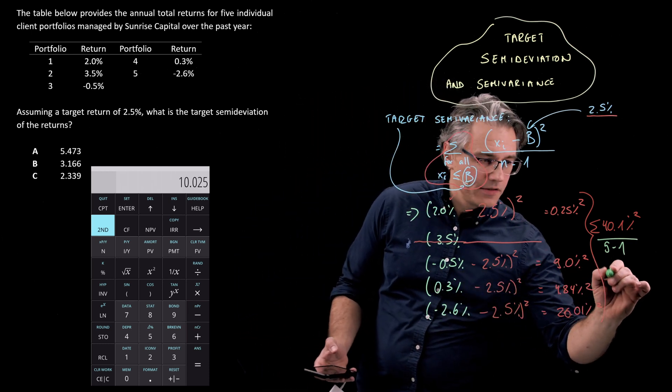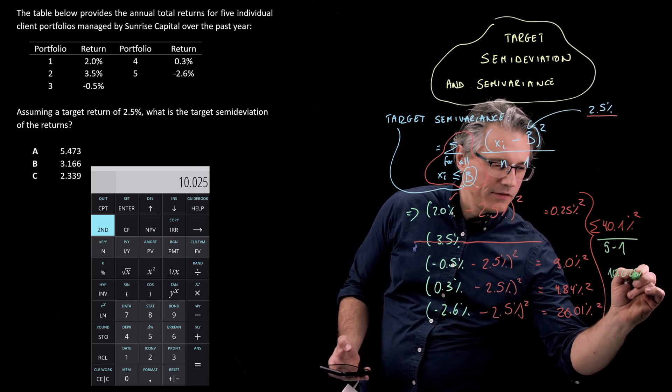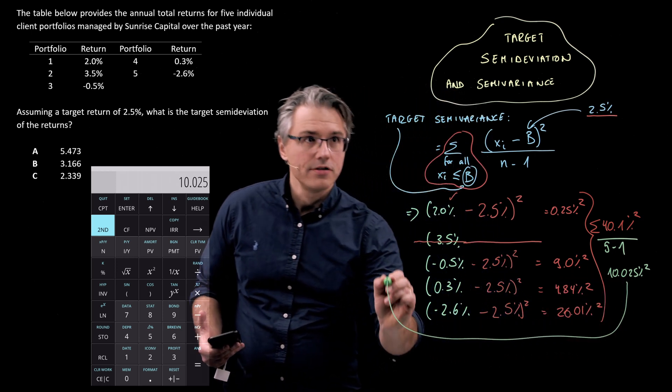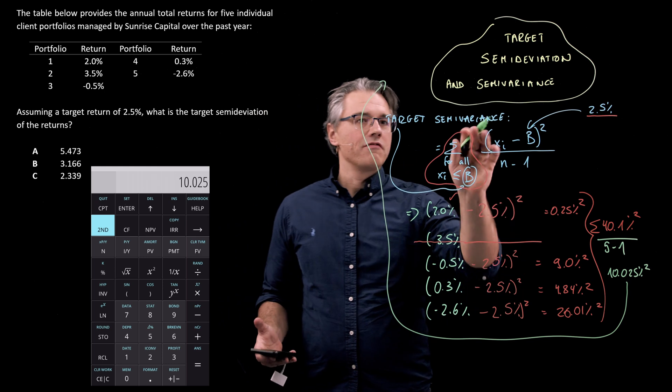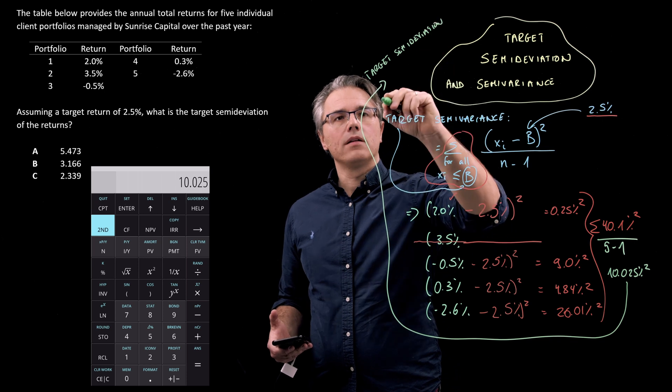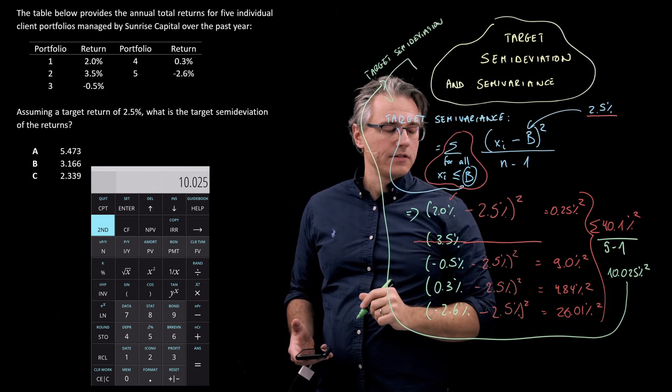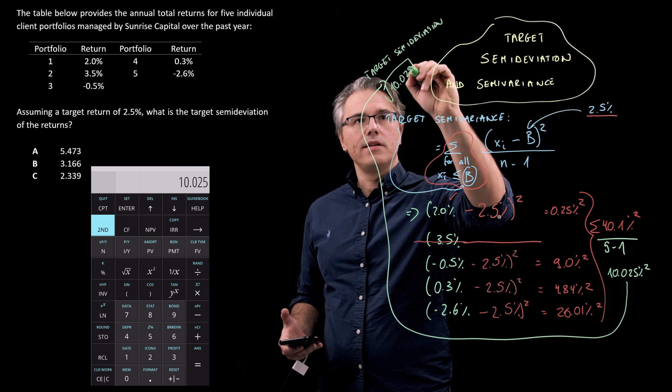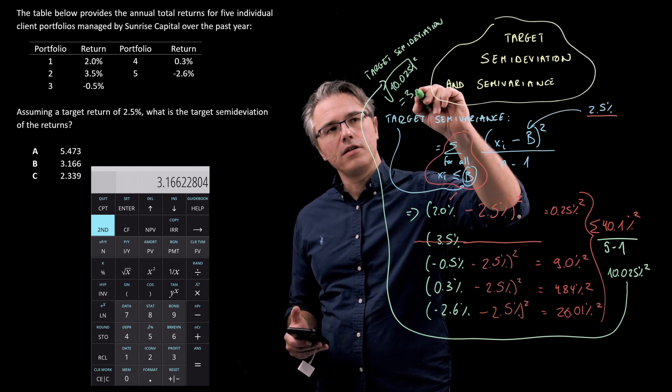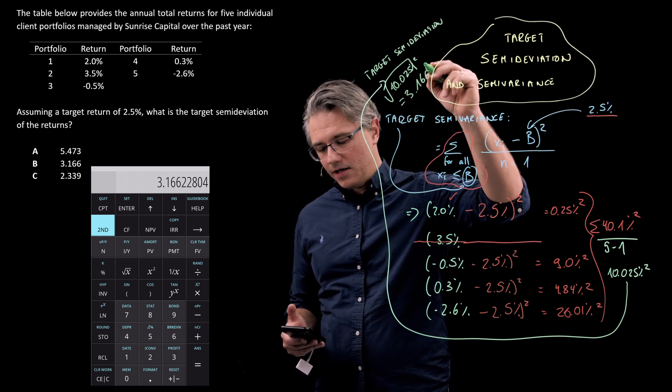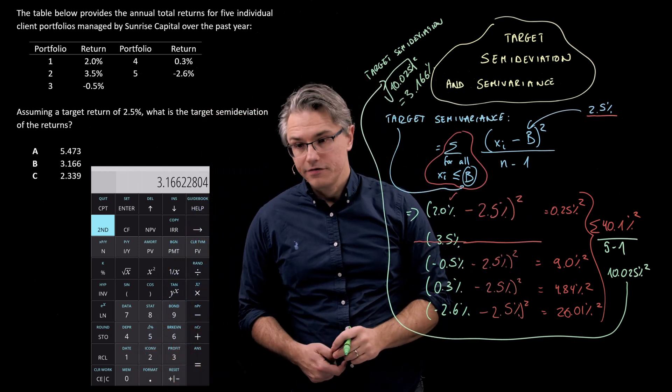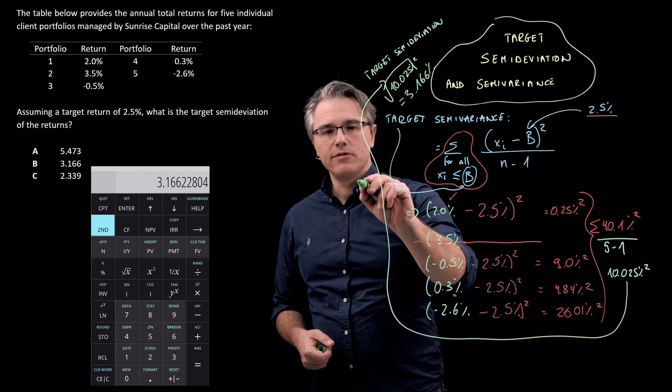This is still expressed as percentages squared, but because this question doesn't ask us for target semi-variance, it asks for target semi-deviation, what I need to do is take the square root of this result, so the square root of 10.025% squared. And if I do this, we get a result equal to 3.166, and this is expressed in percent, so a unit we can easily work with. And as you can see, this corresponds to answer B.